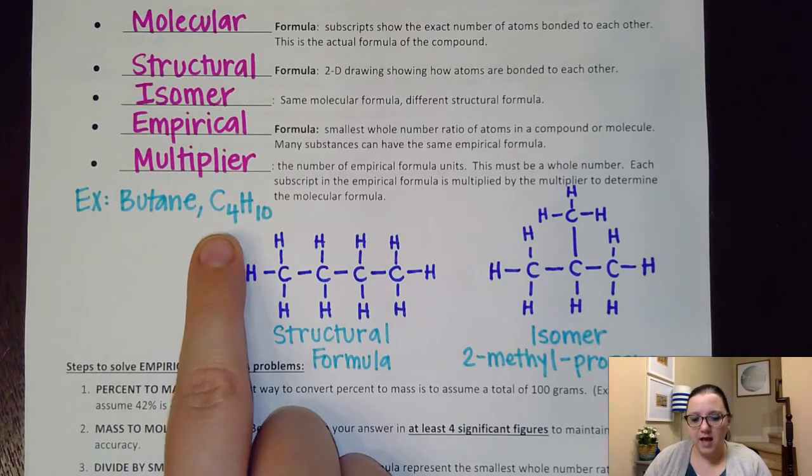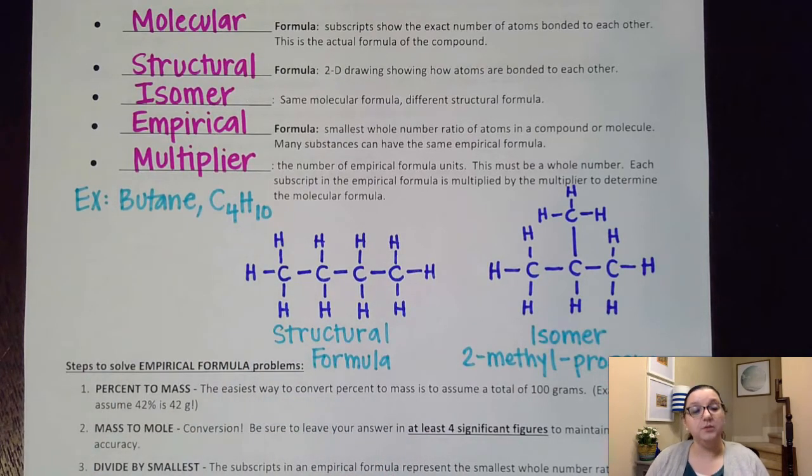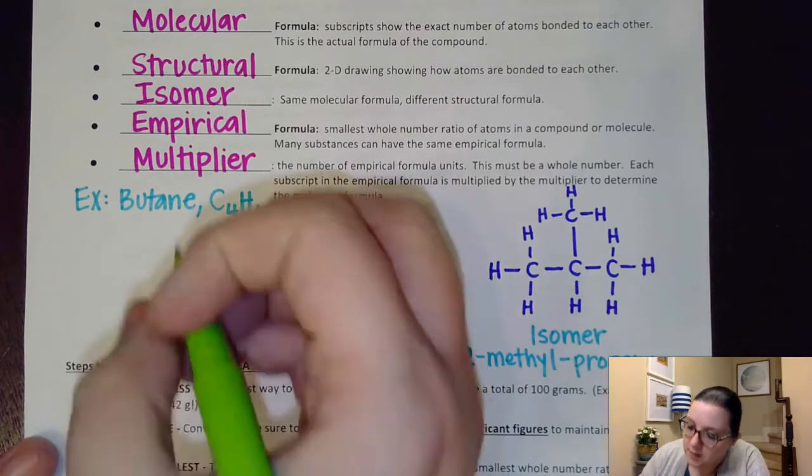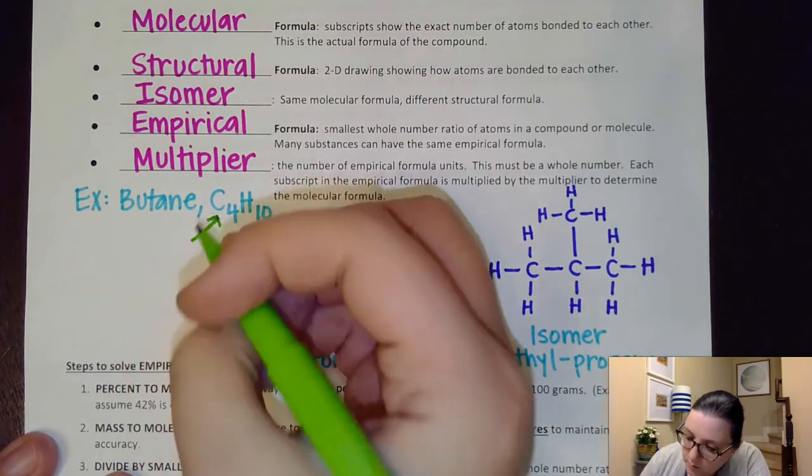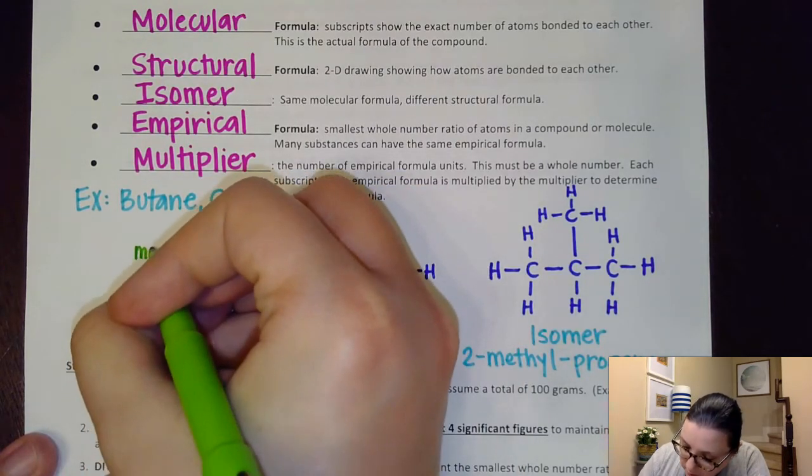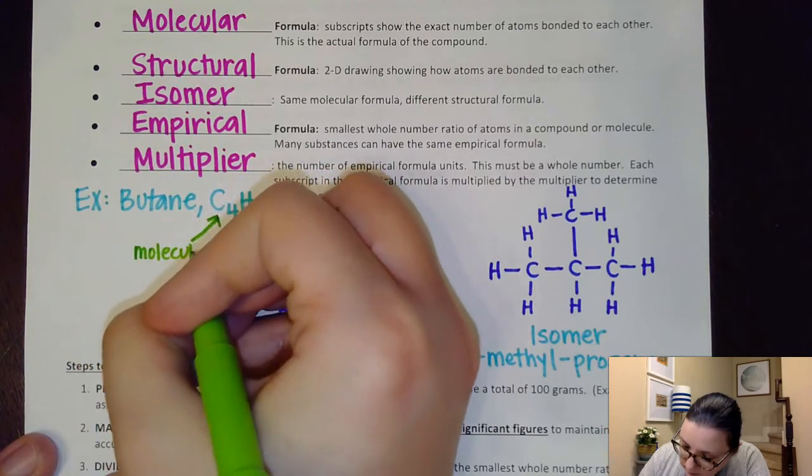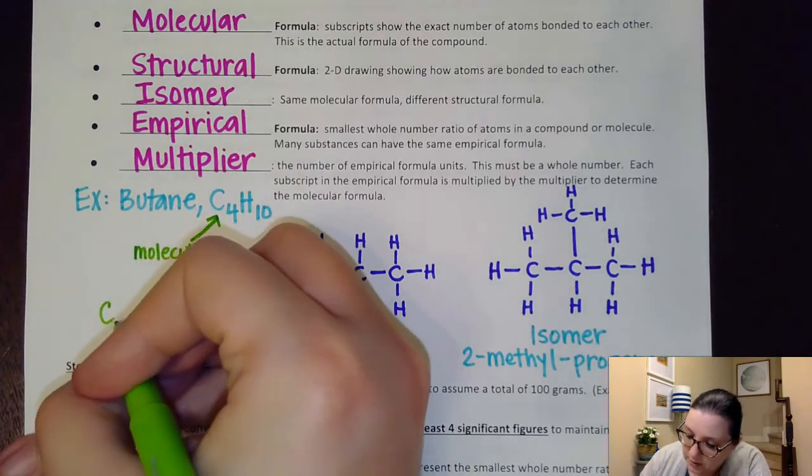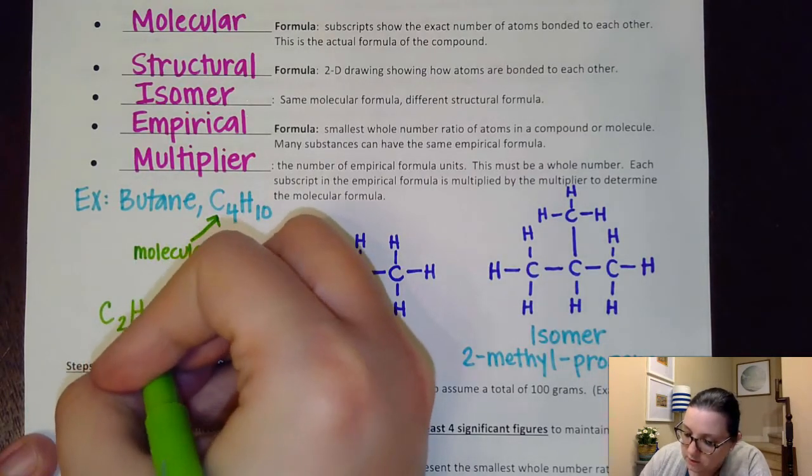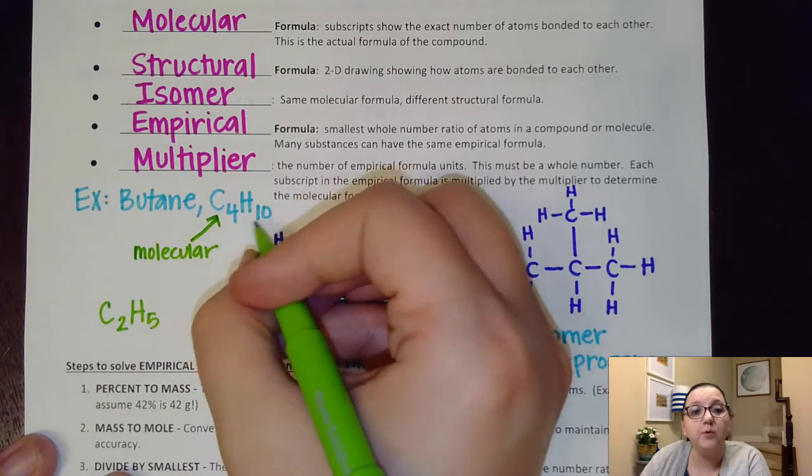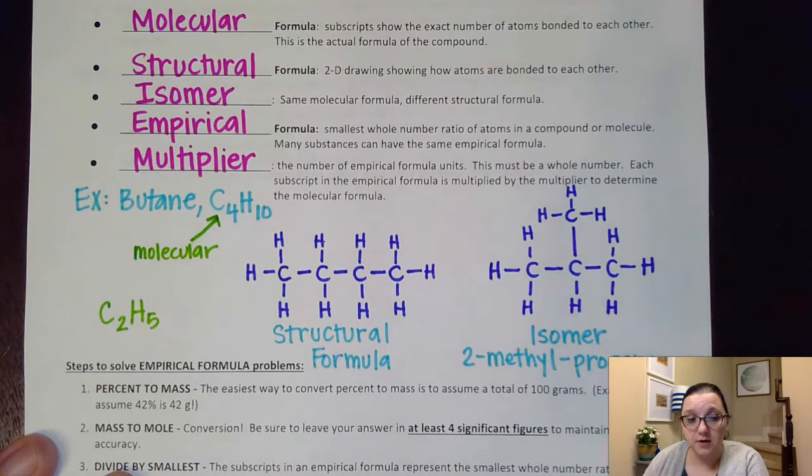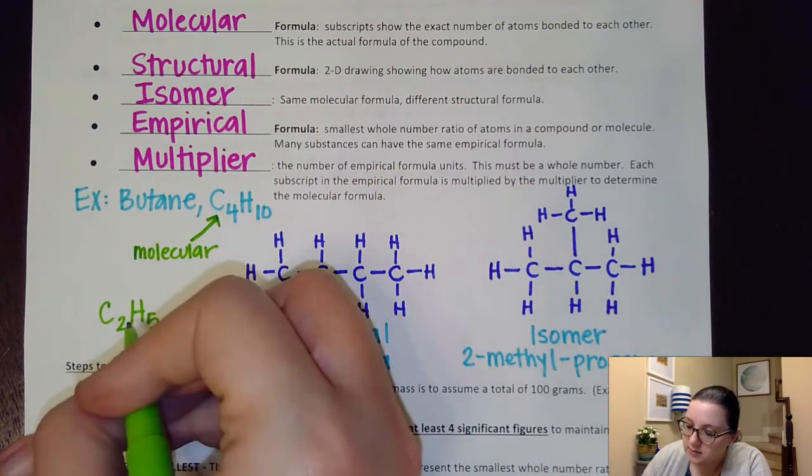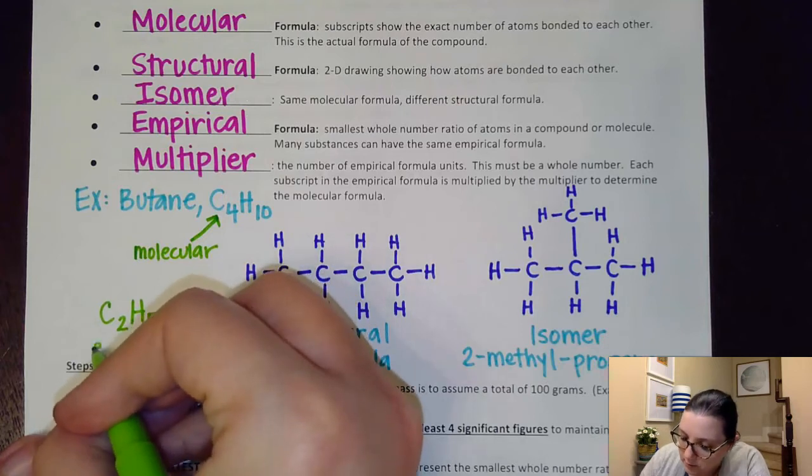But to talk about butane here for just a minute, while this is the actual formula, it's not really the simplest ratio of those elements. So C4H10 is what we refer to as the molecular formula. But if I was to simplify it, I could break it down into C2H5. I could half both of those subscripts very easily. This is what we call the empirical formula.